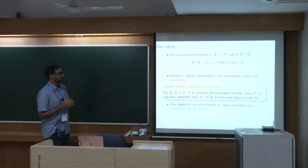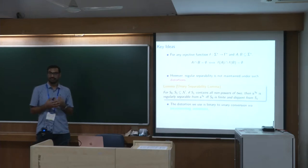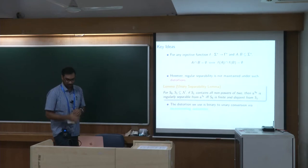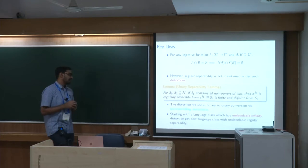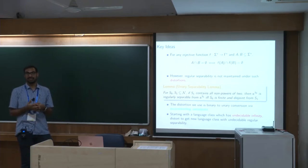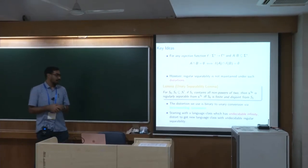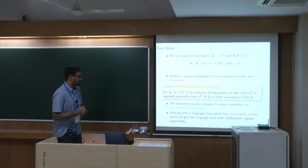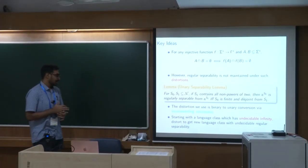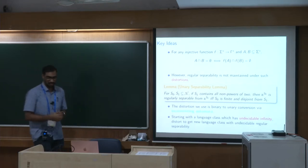The distortion f we use is a binary-to-unary conversion via what we call incrementing automata, and then we apply this unary separability lemma. Starting with a language class having undecidable infinity — meaning we cannot decide if a given language is finite or not — the undecidability of infinity in the original class, when we apply this distortion, results in undecidable regular separability in the resulting language class.